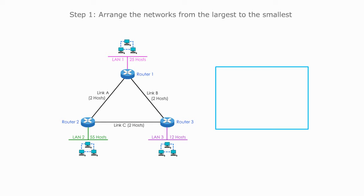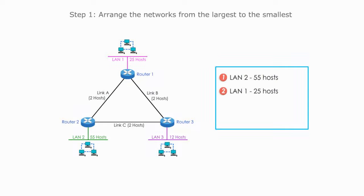Step 1: Arrange the networks from the largest to the smallest. The largest one is LAN 2 with 55 hosts. The next largest is LAN 1 with 25 hosts. The third largest is LAN 3 with 12 hosts. And the smallest are links A, B, and C — these three networks can be arranged together because they are of the same size, each needing two host IDs. Once they are in descending order, we need four more steps to complete our task.